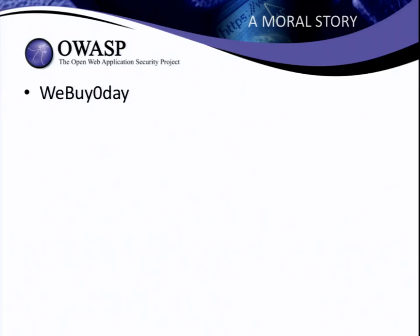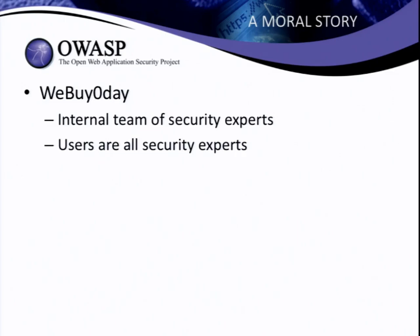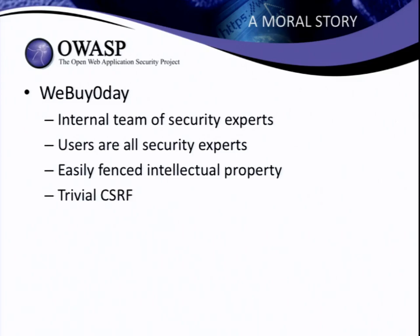Looking back on it now, I have to wonder: how do you have a website owned by a security company with an internal team of security experts, where all the users are also security experts, the website is full of juicy odays and exploits — and yet they've got a trivial cross-site request forgery vulnerability just staring everyone in the face and nobody notices it? I think the answer is that back in 2009, awareness of CSRF was pretty poor. You could have flaws that were really easy to exploit but nobody was looking for them. And that is where cross-origin resource sharing is today.